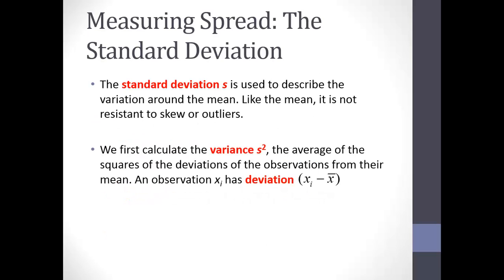One way we talked about to measure spread was the interquartile range. We have two ways, sort of like measuring center — the mean and the median. Over here on spread, we have the interquartile range as well as the standard deviation. We're going to use this lowercase s as our notation for standard deviation, and it's used to describe spread. Like the mean, it is not resistant to skew or outliers.